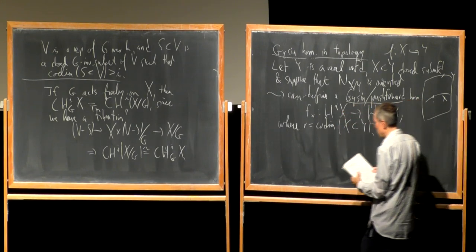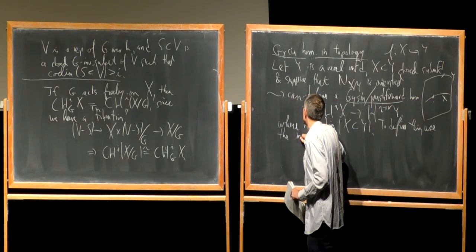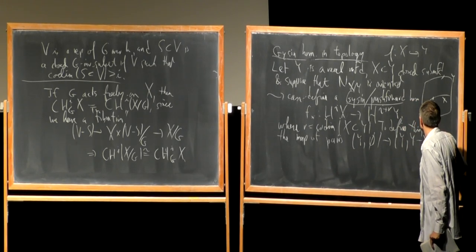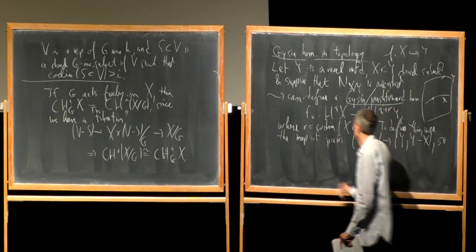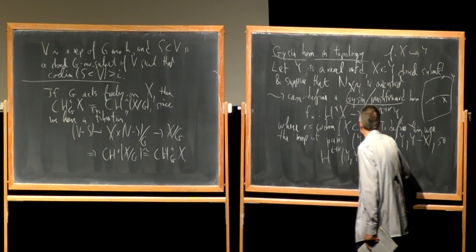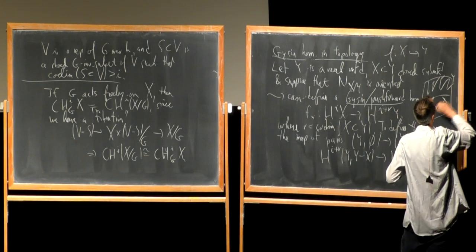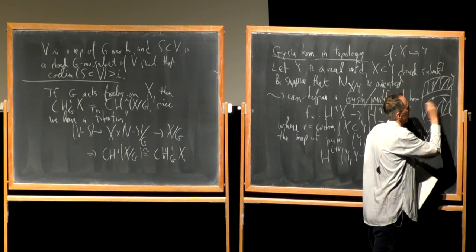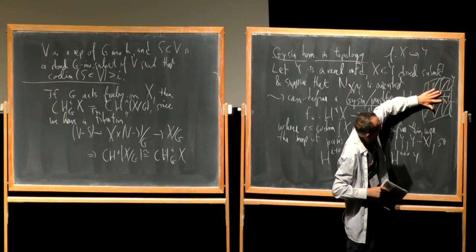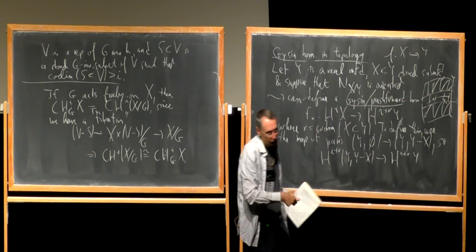It's also easy to define this formally using the Thom isomorphism theorem. You have a map of pairs from (Y, ∅) to (Y, Y minus X), giving a pullback map on cohomology. So you get a map H^{i+R}(Y, Y minus X) to H^{i+R}(Y). The relative cohomology H^{i+R}(Y, Y minus X): if you take Y and identify to a point everything outside X, that's the same as doing the construction for a tubular neighborhood of X, which is the Thom space of the normal bundle — take the total space of the vector bundle relative to the complement of the zero section. By the Thom isomorphism theorem, this is the same as H^i of X, using the orientation on the vector bundle.